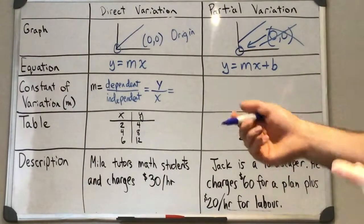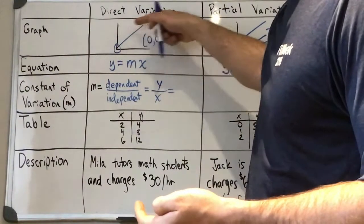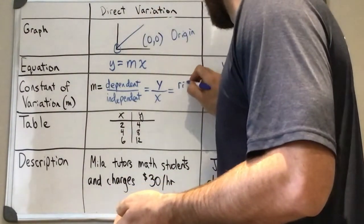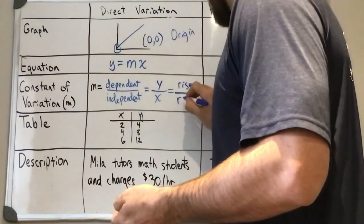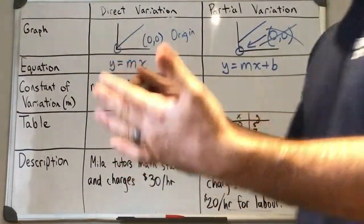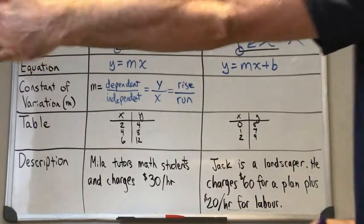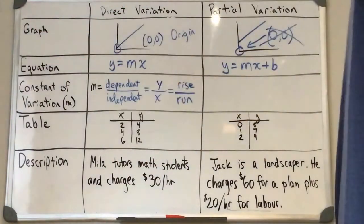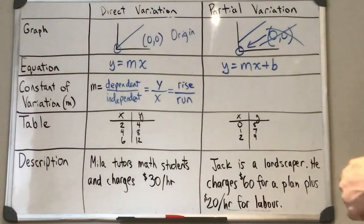Or another way to look at it is how much it's risen divided by how much it's run. So the run is your change along the x-axis, the rise is the change along the y-axis.